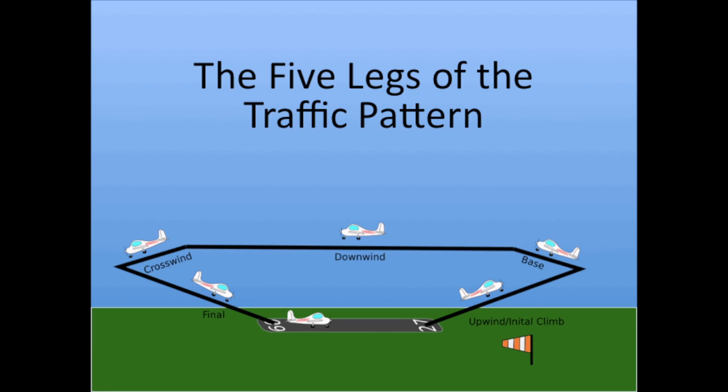This very professionally done vector drawing shows the five legs of the traffic pattern. We have the initial climb, mostly known as the departure leg, the base leg, the downwind leg, the crosswind leg, and the final approach. Note that if an aircraft joins on the other side of the pattern in the opposite direction of the downwind, it is the upwind leg.